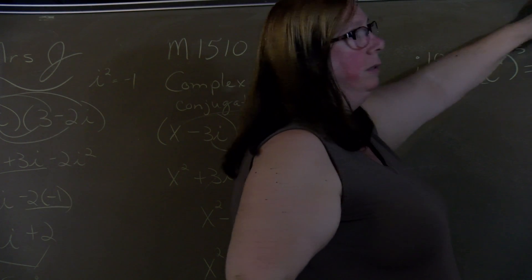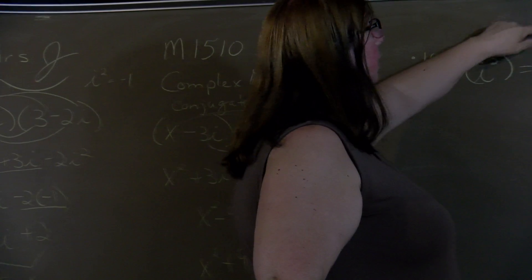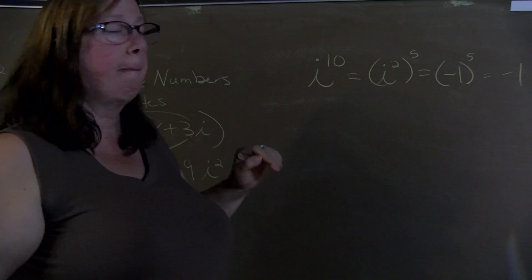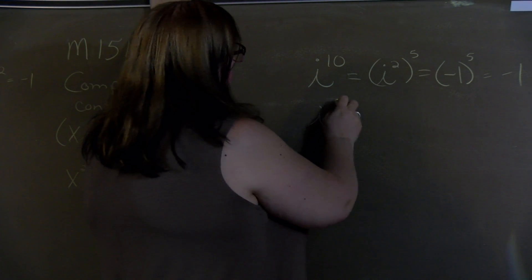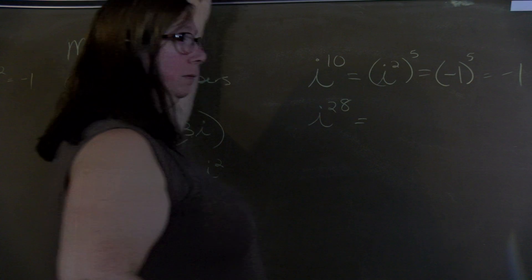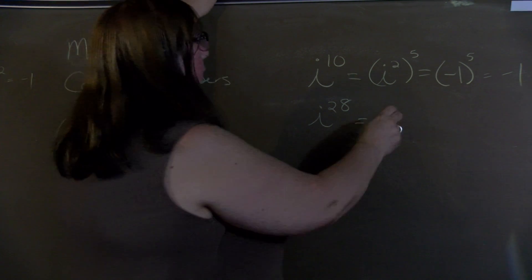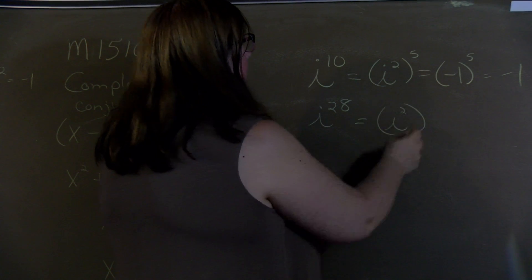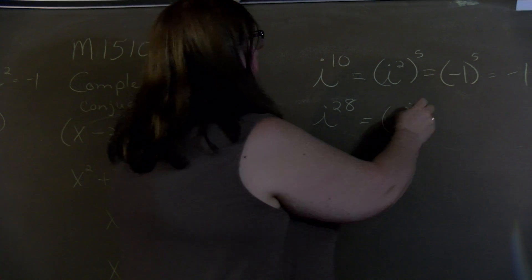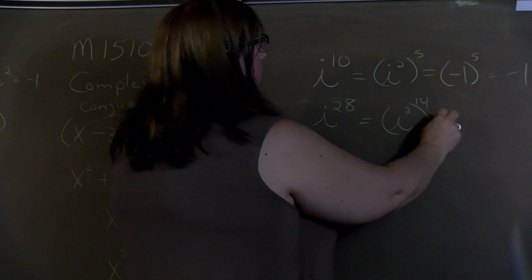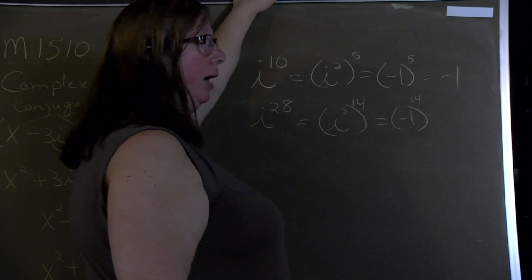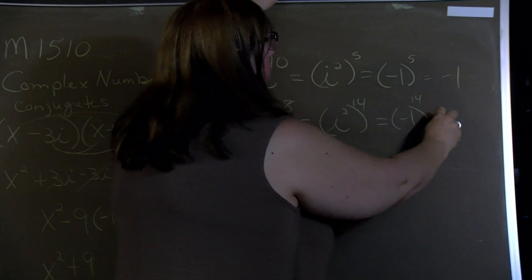And negative 1 times a negative 1 times a negative 1 times a negative 1, if I add 1 to an odd power, let's use bracket 1. So if I add i to the 28, well we'd rewrite it i squared. And then what times 2 will give me 28? And that's 14. So we put our negative 1 for i squared. Since we're taking it to an even power, negative 1 to an even power would be a positive 1.